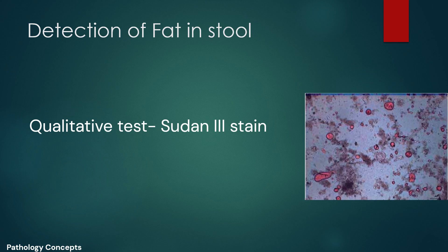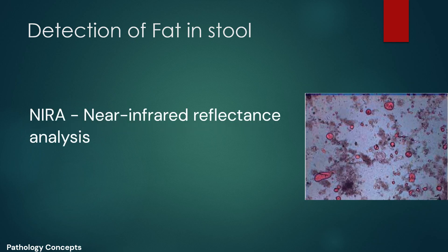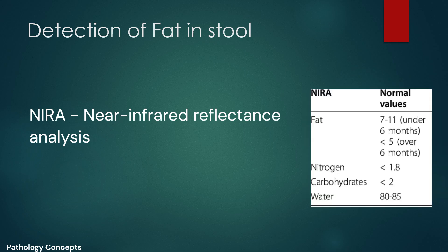Another method for detection of fat in stool is near infrared reflectance analysis (NIRA). This analysis enables simultaneous measurement of fat, nitrogen, and carbohydrate in a single fecal sample. It is a simple, rapid, and reliable method for the measurement of steatorrhea.